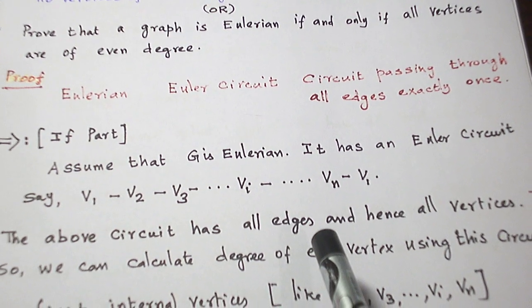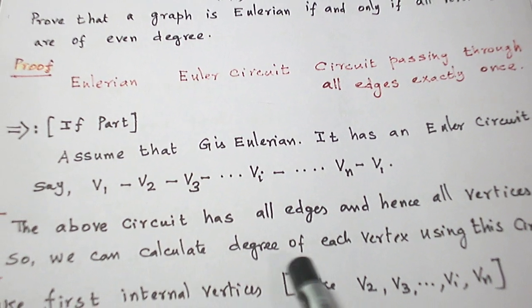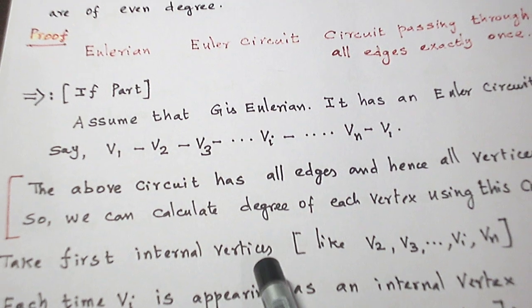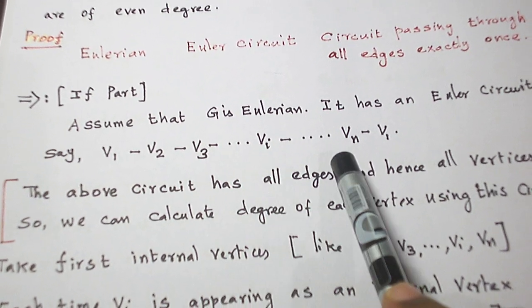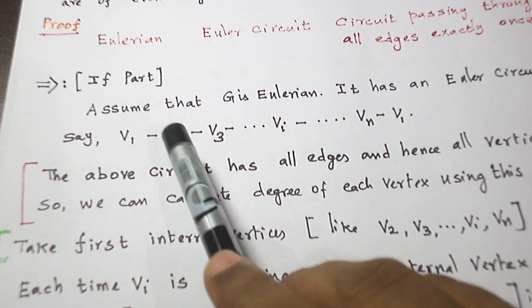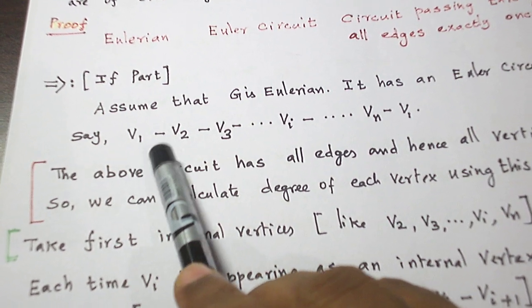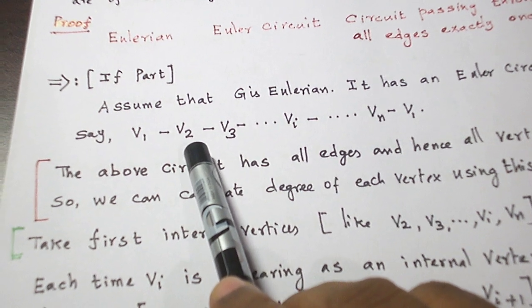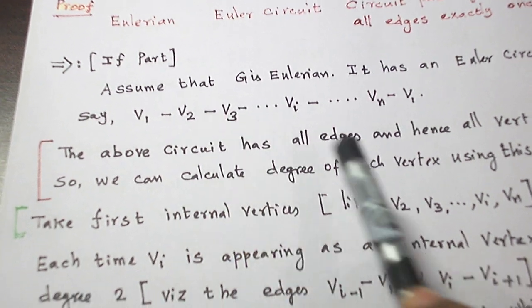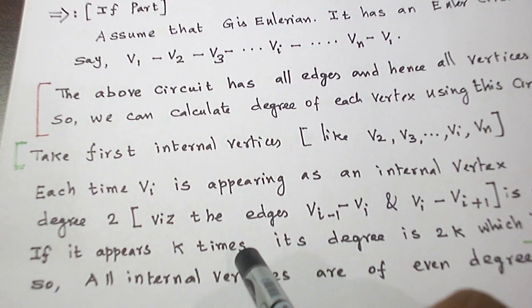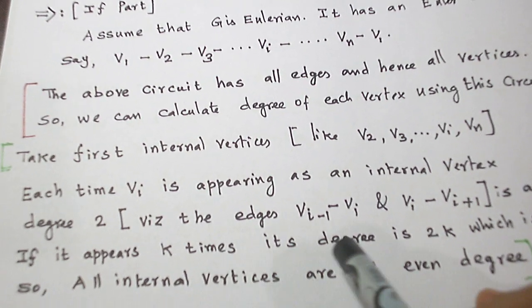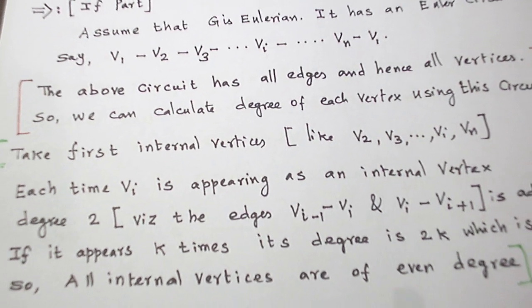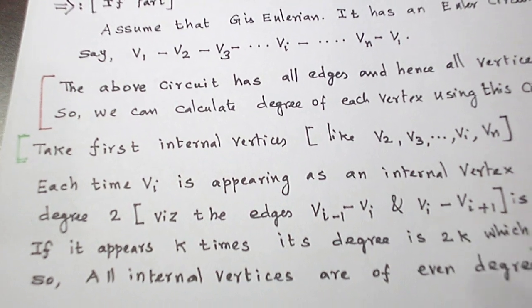Since all the edges are present exactly once and all the vertices are also present, we can calculate the degree of each vertex using this circuit. I classify into two categories. First, let us take internal vertices like V2, V3, Vi, ..., Vn. Each time, for example, if we take V2, it is an internal vertex. Via the edge V1-V2, a degree 1 is added; via the edge V2-V3, a degree 1 is added. So each time a vertex appears as an internal vertex, degree 1 plus 1, that is degree 2, is counted. Suppose the vertex is appearing k times; then the degree of that vertex is 2k. So for each internal vertex, degree is 2k, that is even.